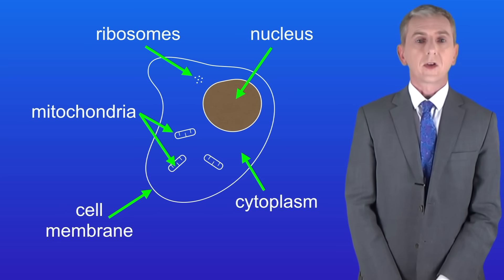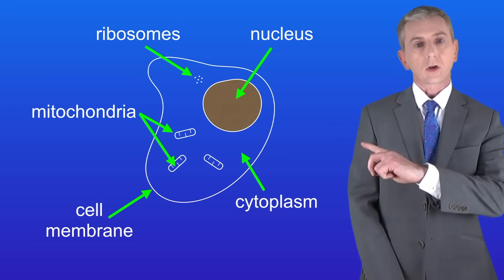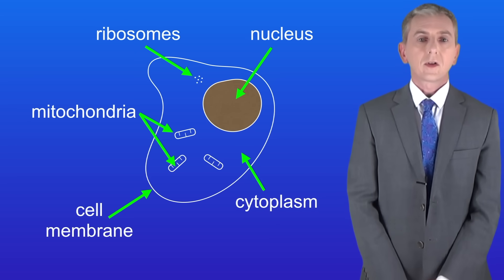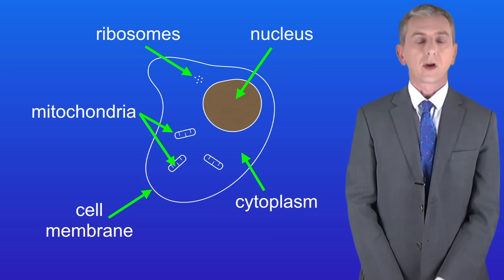In the last video we looked at animal cells and we saw that they contain these structures: the nucleus, the cytoplasm, the cell membrane, mitochondria, and ribosomes.